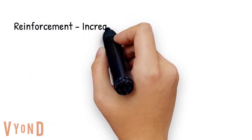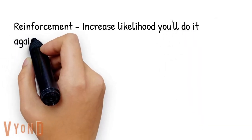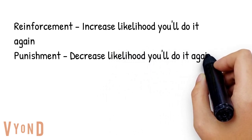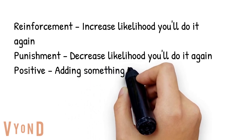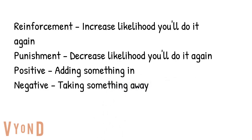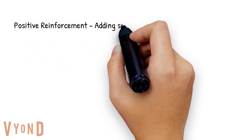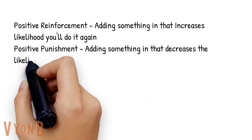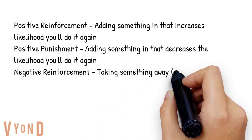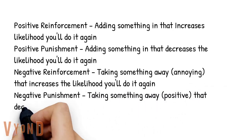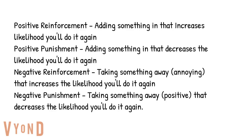A good way to remember these terms: reinforcement increases the likelihood that you'll do whatever you just did again, whereas punishment decreases the likelihood. Positive means adding something in and negative means taking something away. So, positive reinforcement is adding something in that increases the likelihood of the behavior. Positive punishment is adding something in that decreases the likelihood. Negative reinforcement is taking something away that increases the likelihood. And negative punishment is taking something away that reduces the likelihood of the behavior.